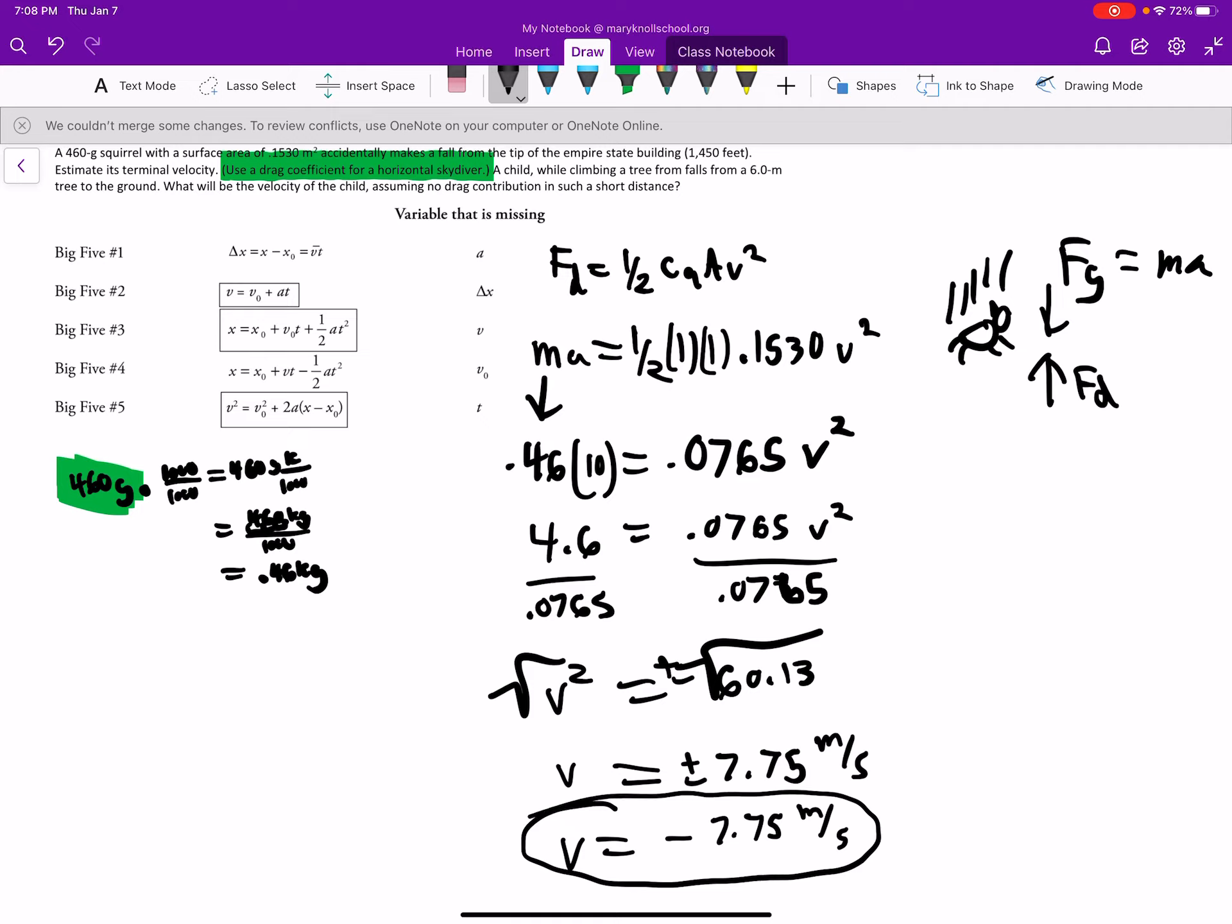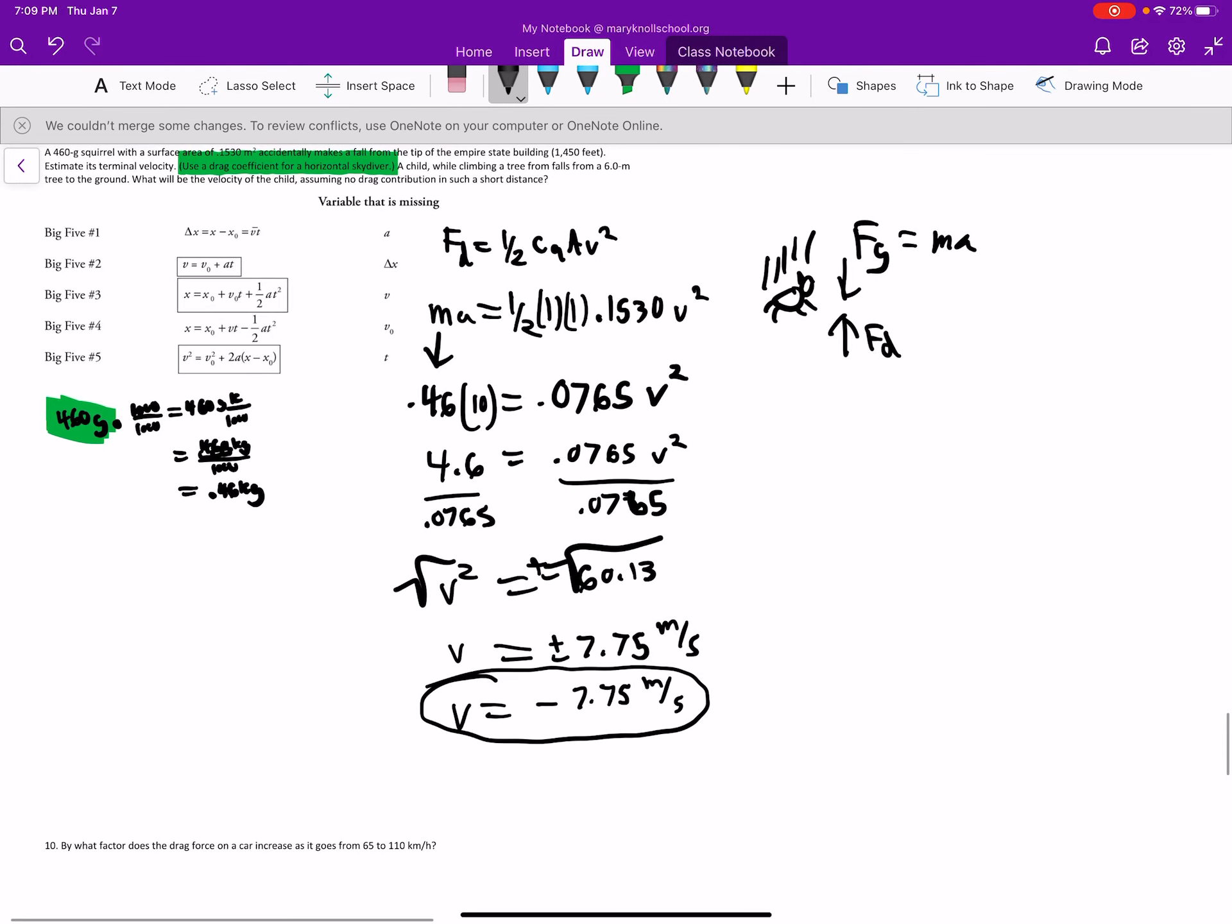Okay, so let's move on to the next one, where it says, now a child, while climbing a tree, falls six meters to the ground. What will be the terminal velocity of the child, assuming no drag contribution in such a short distance? So terminal velocity is when you hit maximum speed. So for a skydiver, it's around 180 miles per hour. That's how quick you'll go. If you jump out of an airplane, right before you hit that parachute, you're going 180 miles per hour. Let's change this to a four meter tree, actually. I like that better. Yeah, four meter tree.